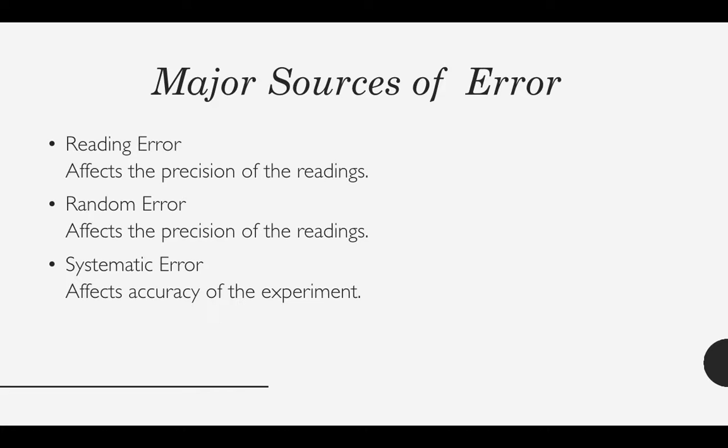Random error refers to the spread in the values of a physical quantity from one measurement of the quantity to the next, caused by random fluctuations in the measured value. This type of error also affects the precision of the experiment. We assume that the best estimate of the measured value is the average value of many measurements. Standard deviation is also one of the methods to calculate the spread of our readings from the mean value.